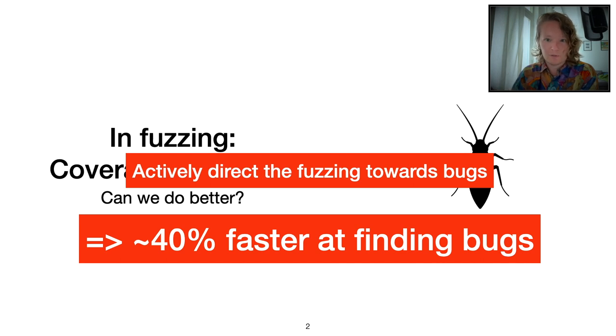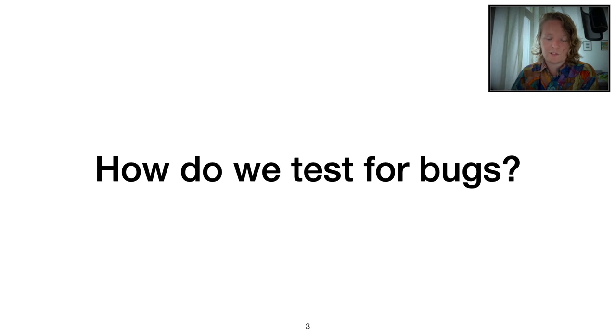How do we actually target bugs? Well, let's take a step back first. When you have a program and you have some weird behavior in it, you have some bug, how do you typically try to find out the root cause of this bug? How do you try to triage the bug?